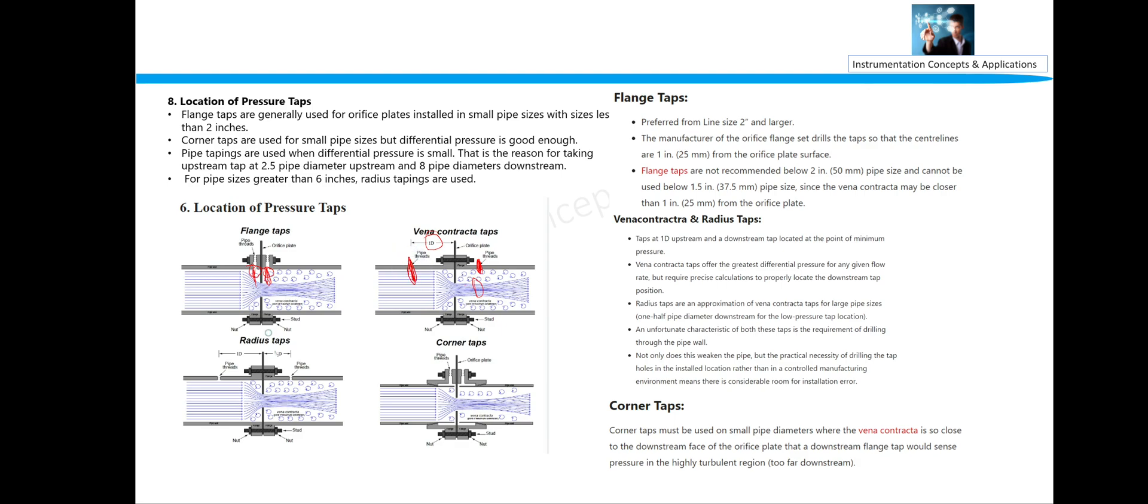So LP is from there, and HP will be from 1D of the thread. So this is the vena contracta taps. Radius tap is very simple: it should be 1D and half D, and D and D by 2. This is called D and D by 2. And corner taps: you can see here these are the flange taps, and here these are corner taps. These are the corner taps.